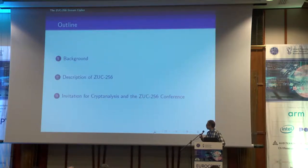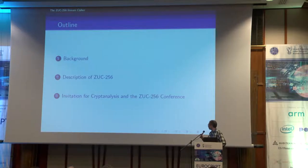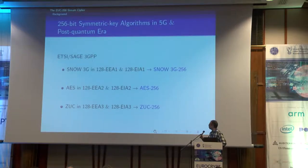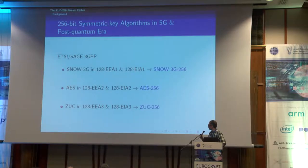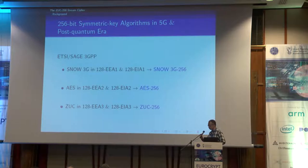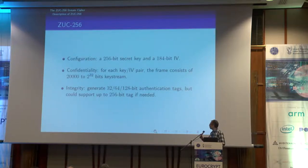We first give some background and then a brief description of ZOOC 256. Why do we need a new stream cipher? Because currently there are three ciphers in the ETSI 3GPP standards: Snow 3G, AES, and ZOOC. Snow 3G and AES already have 256-bit versions, and now we introduce the 256-bit version of ZOOC.